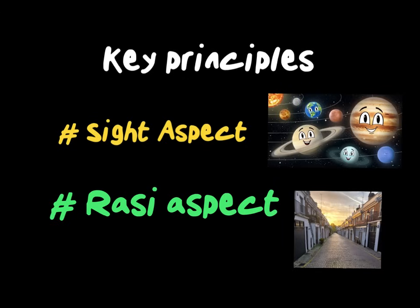There are two types of aspects operating in your chart simultaneously impacting you — in your D1 chart and your Varga charts, all of them. First, we have the sight aspects, or the actual desire of the planets, which are aspecting not each other but the individual houses ahead. Every planet has their desire, their dristi, but it is temporary, manifesting mostly in the Mahadasha. Secondly, we have the Rasi or sign aspects — signs aspect each other — and this becomes part of the permanent architecture of your charts.